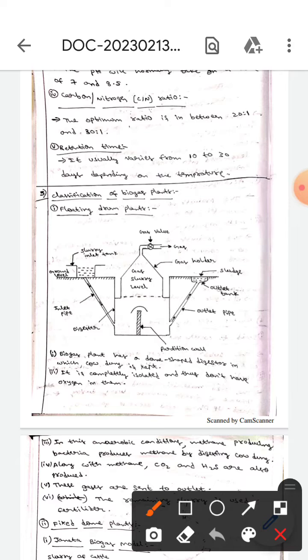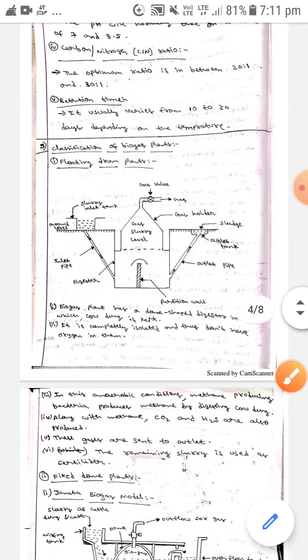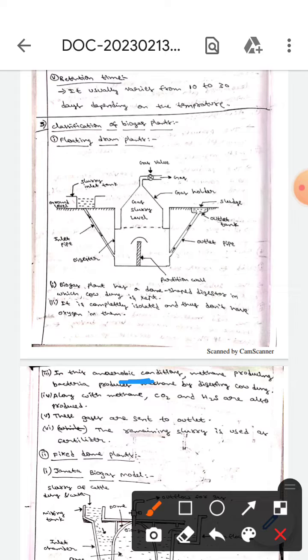have any oxygen in it, so it will be in an anaerobic condition. In this anaerobic condition, methane-producing bacteria produce methane by digesting cow dung. Along with methane, CO2 and H2S are also produced. These gases are sent